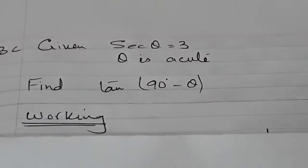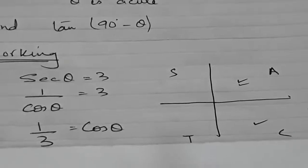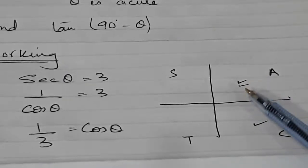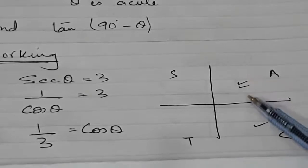Now let's look at another example, 3C. The two given hints are sec θ = 3 and θ is acute. Theta acute means it is in the first quadrant. Since sec θ = 1/cos θ, cross-multiplying gives cos θ = 1/3, which is positive. That means the answer lies in the first and fourth quadrant, and combined with the hint that θ is acute, the answer is in the first quadrant — where all trigonometric answers are positive.